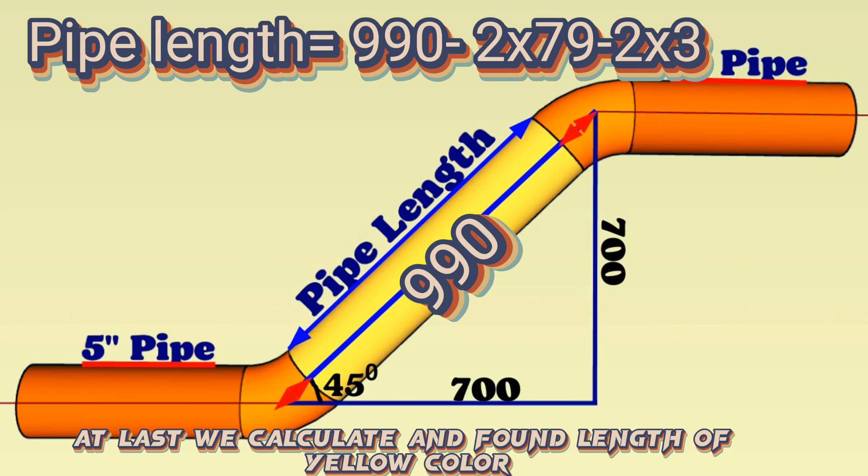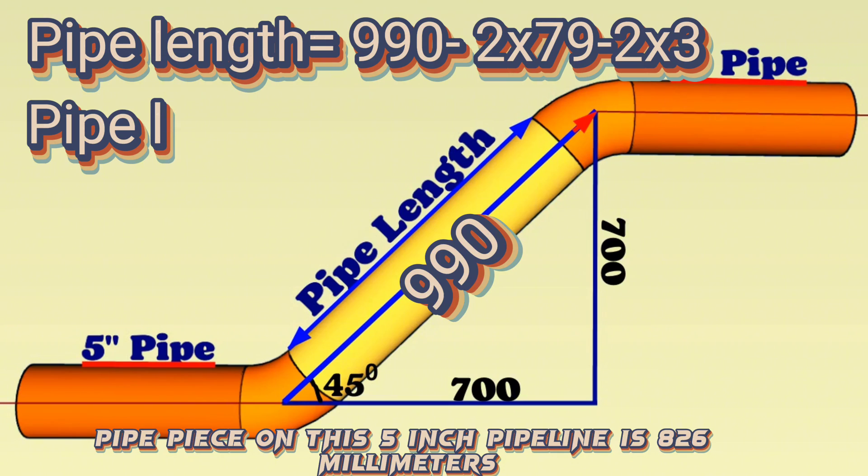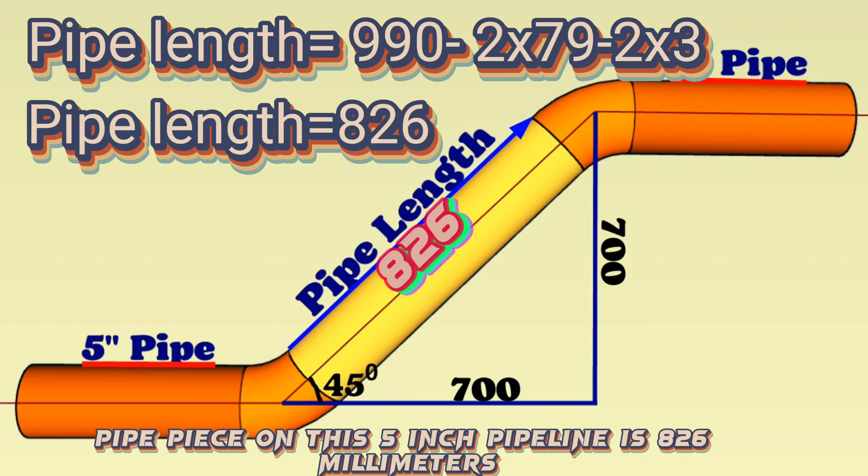At last we calculate and found length of yellow color pipe piece on this 5-inch pipe line is 826 millimeters.